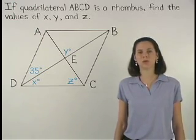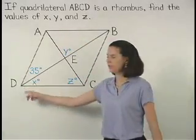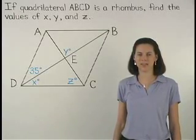In this example, we're given the quadrilateral ABCD is a rhombus and we're asked to find the values of X, Y, and Z.